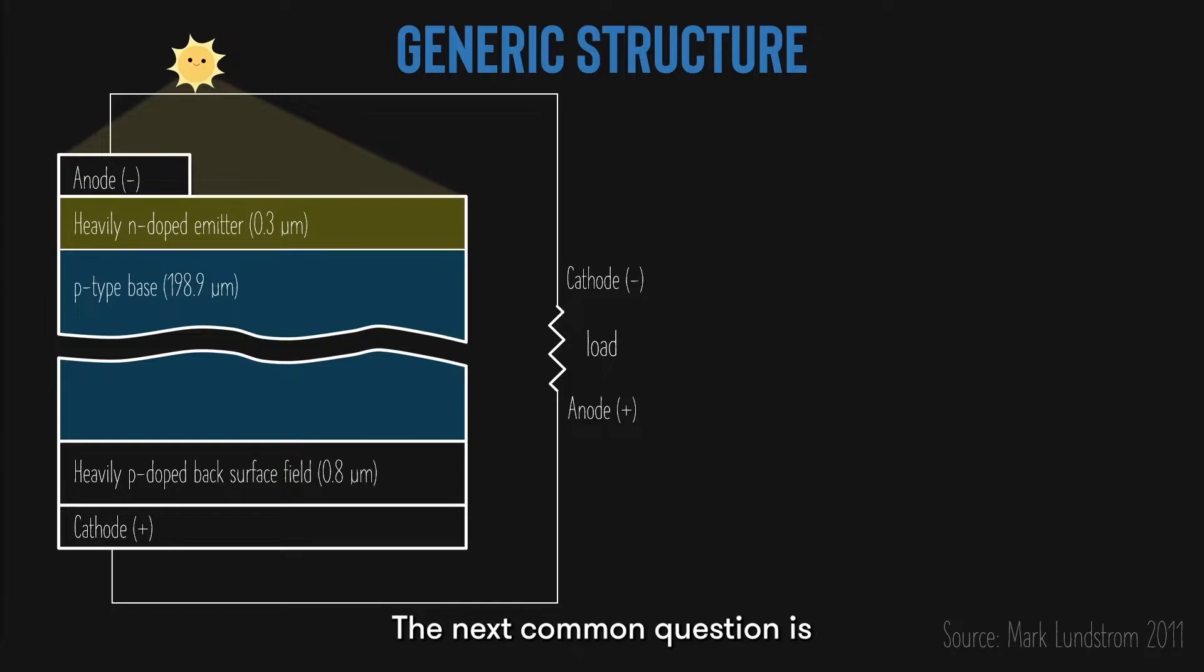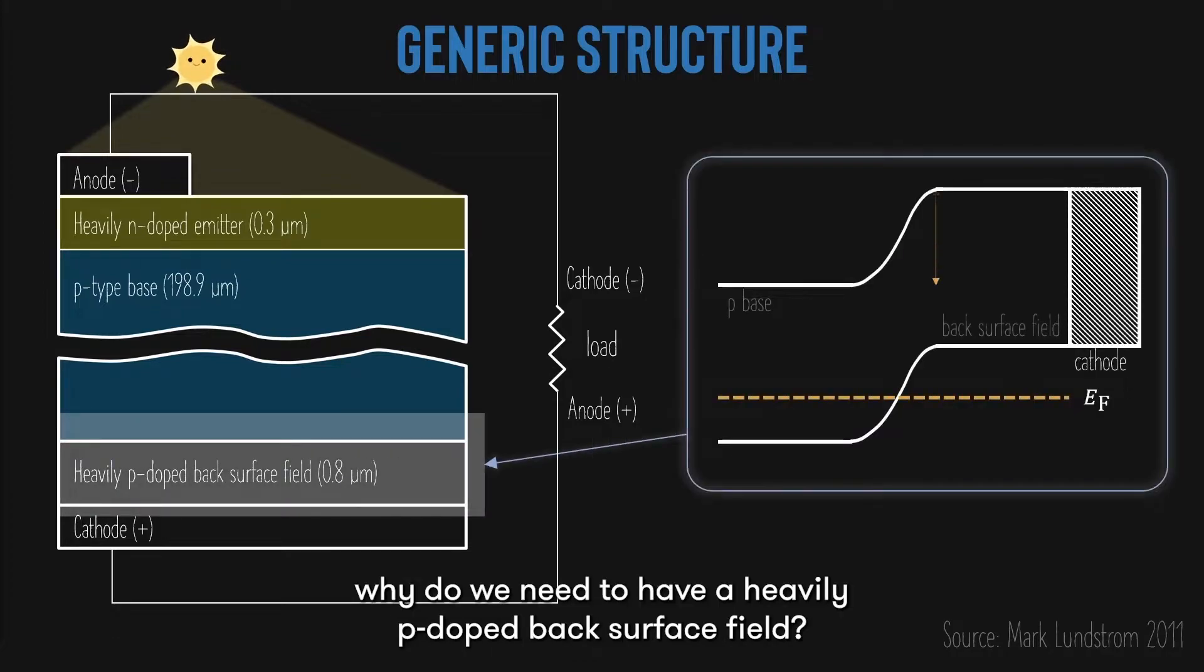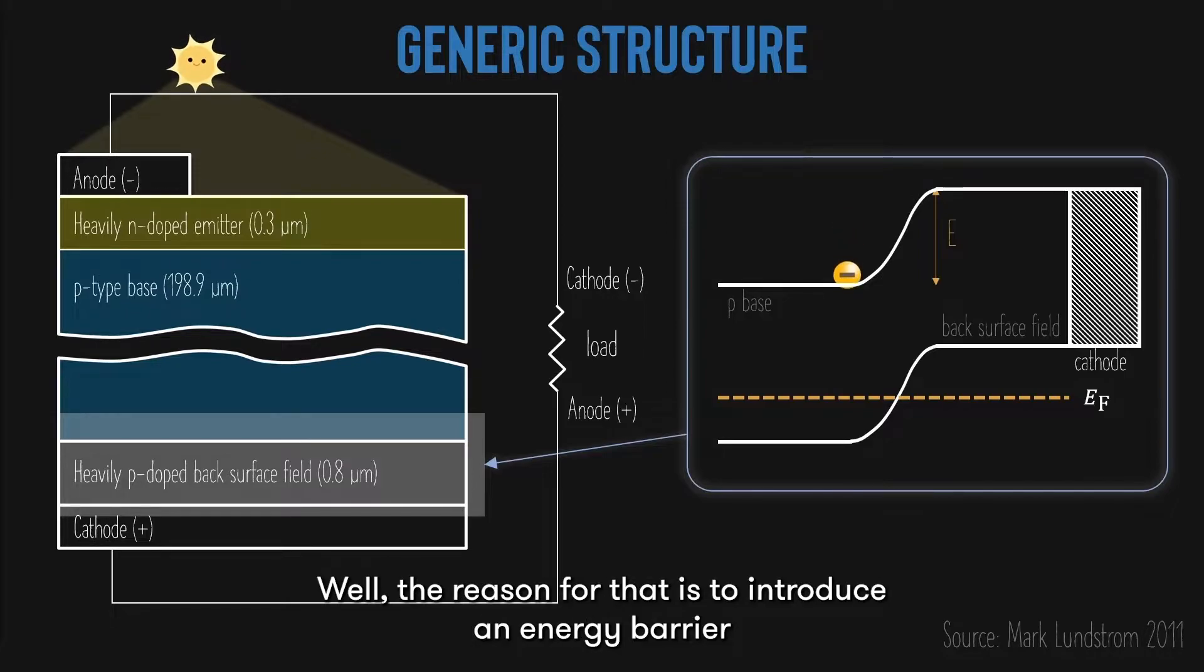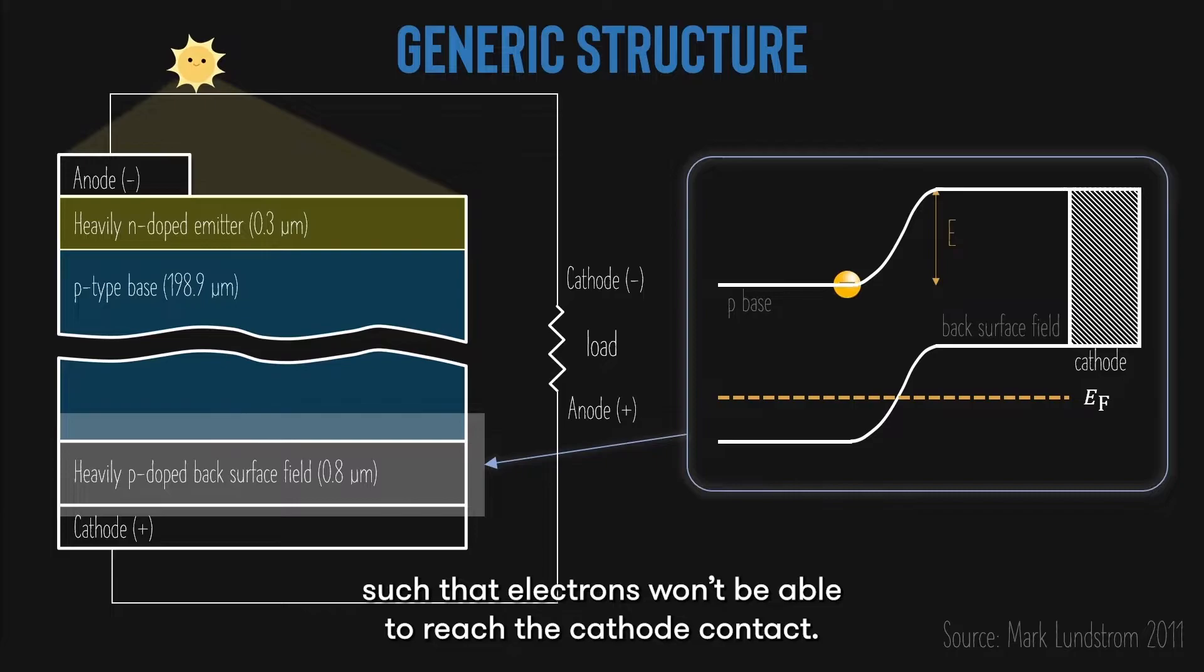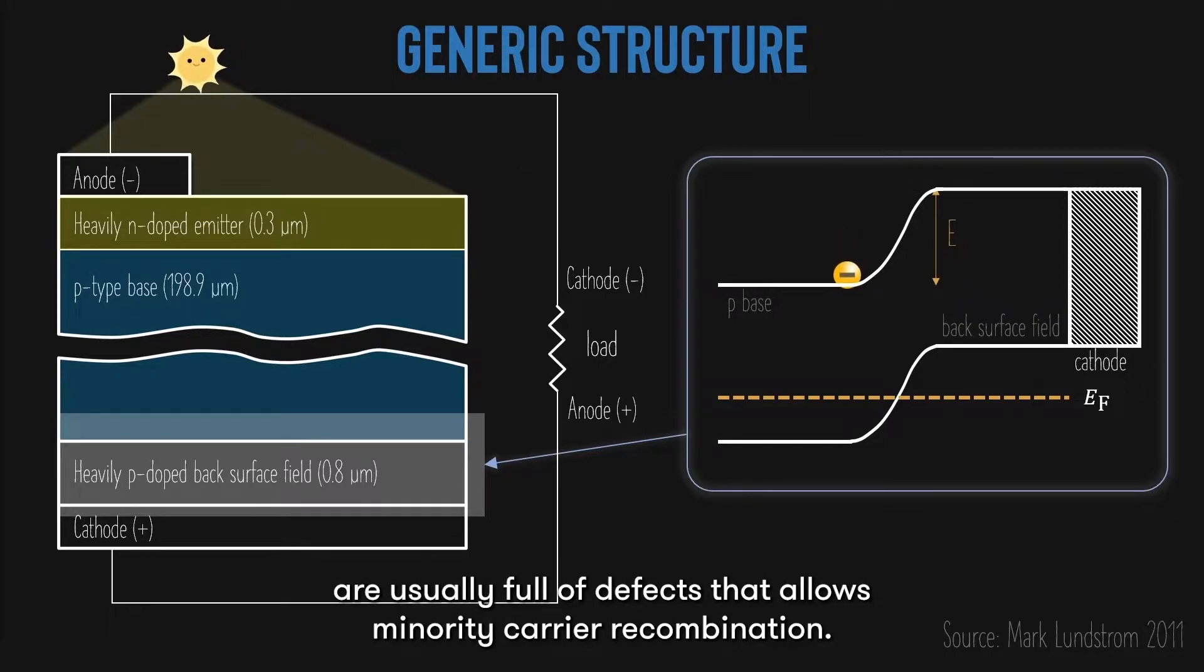The next common question is why do we need to have a heavily P-doped back surface field? Well, the reason for that is to introduce an energy barrier such that electrons won't be able to reach the cathode contact. This is because the contacts are usually full of defects that allow minority carrier recombination.